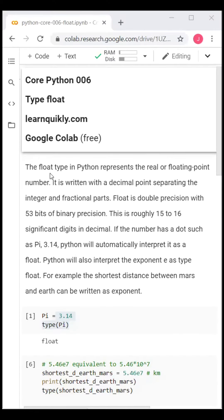The float type in Python represents the real or floating point number. It is written with a decimal point separating the integer and fractional parts. Float is double precision with 53 bits of binary precision. This is roughly 15 to 16 significant digits in decimal.